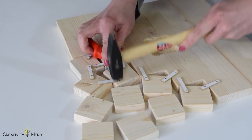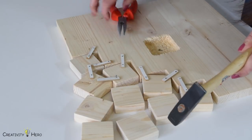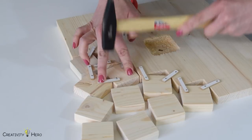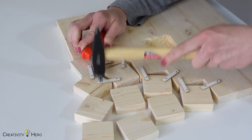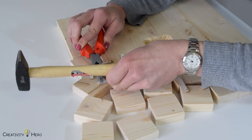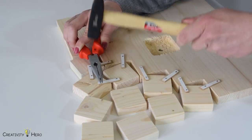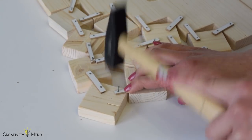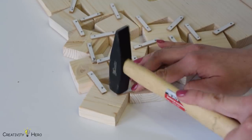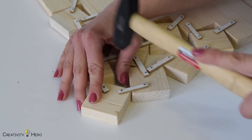Then I connected all the squares using 13 mm long nails and the mallet. Make sure to place all the pieces of plywood on the connection points of the squares. That way they won't be visible on the front side of the clock.